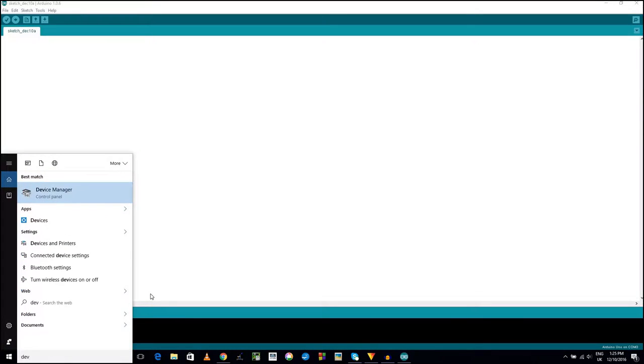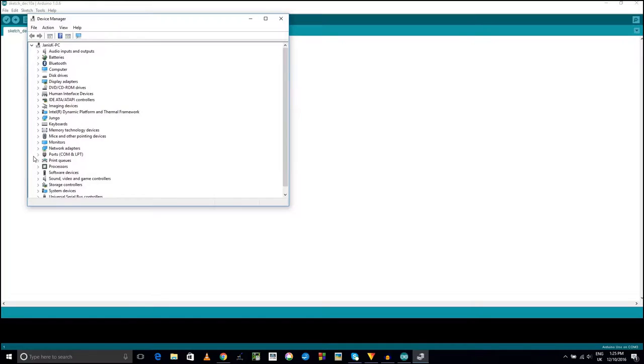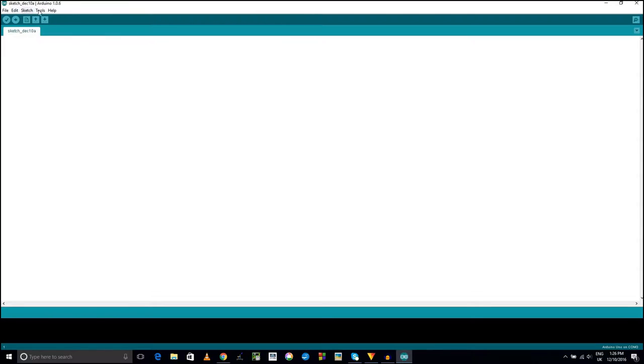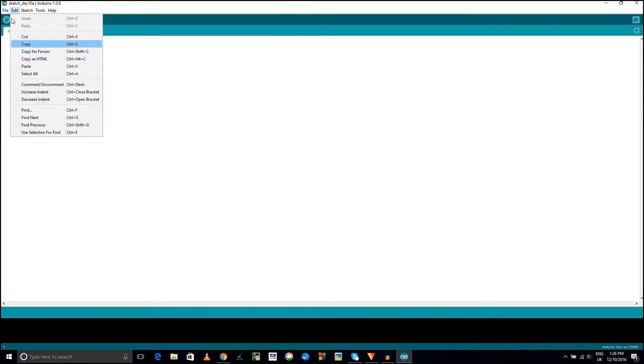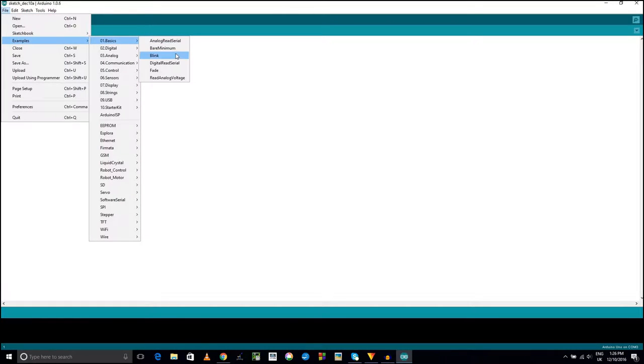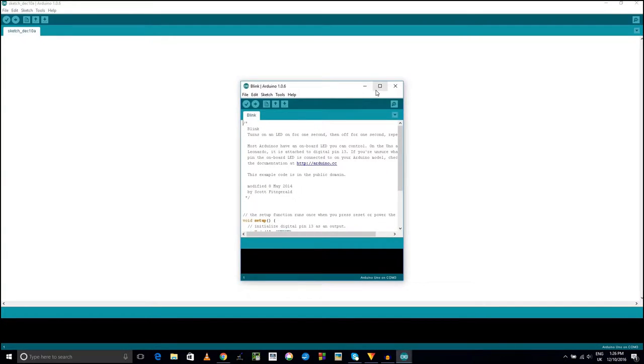After plugging Arduino board into your computer, check which COM port it is connected to. Then make sure that it matches the one in your Arduino software. Now I will upload one of Arduino example programs called Blink.